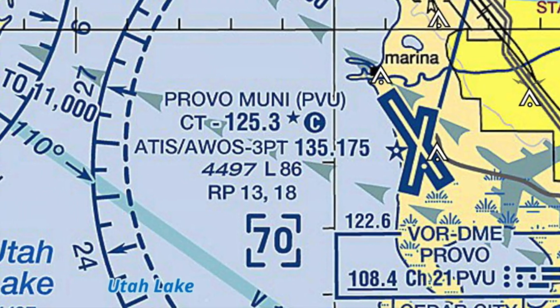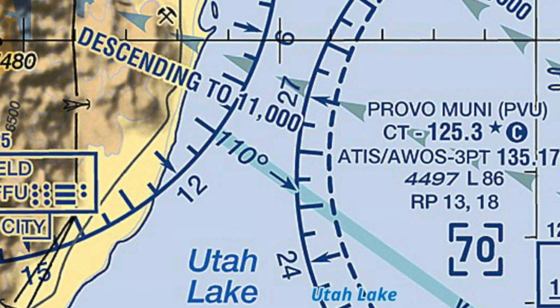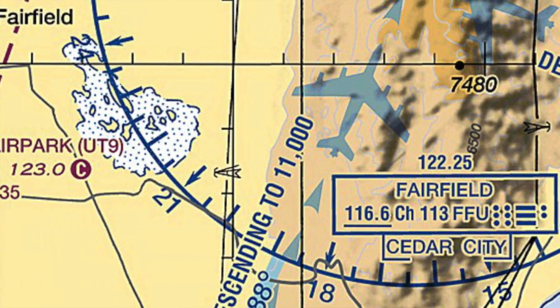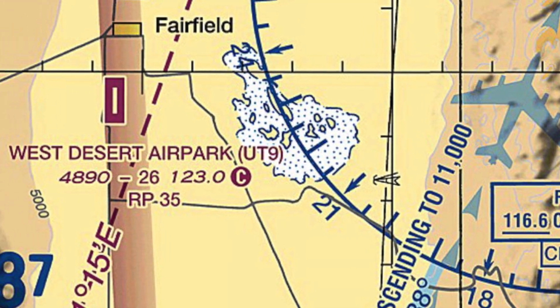You and two friends like to visit obscure state parks. This morning, the three of you flew an Archer III from Provo, Utah to West Desert Air Park to visit Camp Floyd State Park in Fairfield, Utah. Since two of you were pilots, you flipped a coin to see who would fly which leg. Your friend won the toss and flew the morning leg, and you are flying the return leg this afternoon.